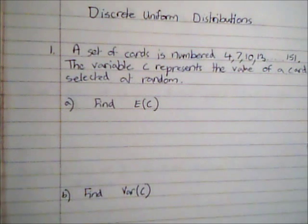In this video we're going to look at a special case with a discrete random variable, which is when it is a discrete uniform distribution. This is when each of the different outcomes has the same chance of being selected. We're told here there's a set of cards numbered 4, 7, 10, 13, and so on up to 151. This shows an arithmetic progression, and the variable C represents the value of a card selected at random.